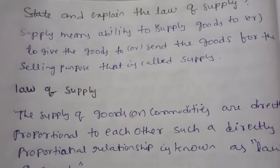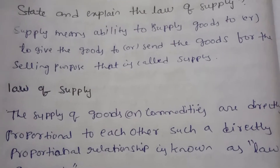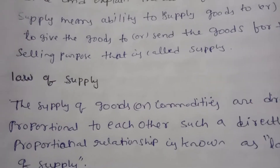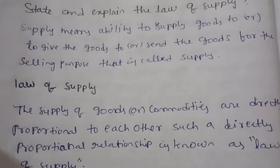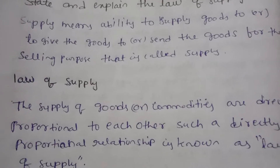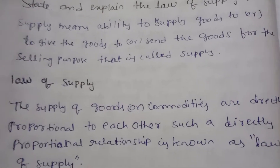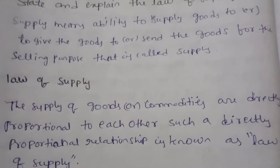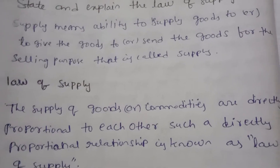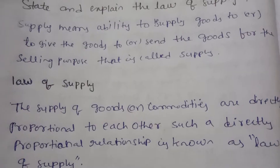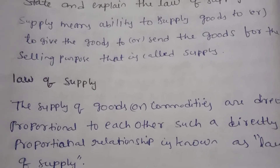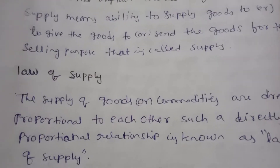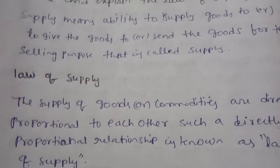We have products such as a company. Products are in a place. Suppliers supply. Supply means goods. Supply means selling.